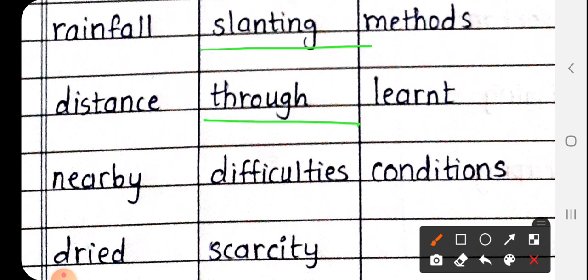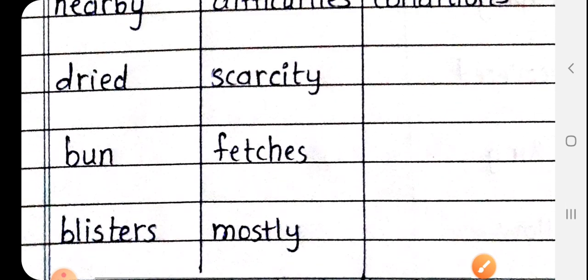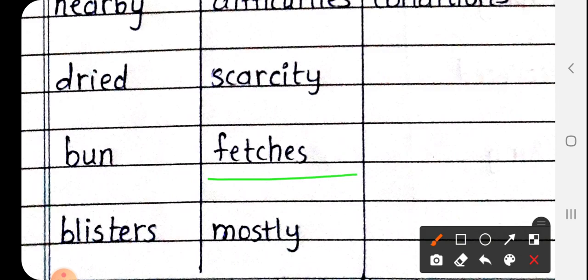Through. T-H-R-O-U-G-H, through. Next is scarcity. Scarcity. Next is fetches, fetches. Next is mostly. Mostly.